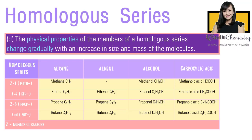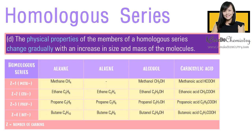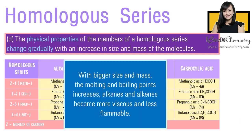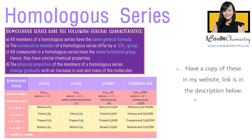The physical properties of the members of a homologous series change gradually with an increase in size and mass of the molecules. As we go down each homologous series, the molecular size of the members increases. With bigger size and mass, the melting and boiling points increase. Alkanes and alkenes become more viscous and less flammable. These are the general characteristics of the homologous series.